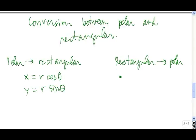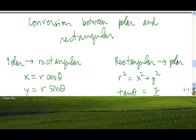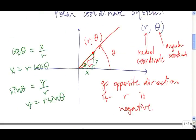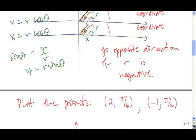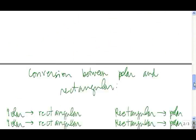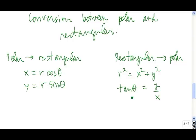To go from rectangular to polar, r squared equals x squared plus y squared, and the tangent of theta equals y divided by x. So in this case we know x and y, and this is how we find r and theta. The first formula follows from the Pythagorean theorem: the hypotenuse is r, so x squared plus y squared equals r squared. We can also see that tangent of theta is y over x, because the tangent of an angle is the length of the opposite side divided by the length of the adjacent side. That's why these two sets of conversion formulas are true.